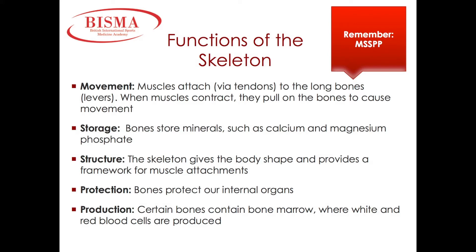Why is our skeleton so important? Without the skeleton, we wouldn't be able to move, because muscles attach via tendons to our long bones — also known as the body's levers — and when a muscle contracts, they pull on the bones to cause movement. Bones also store minerals such as calcium, magnesium, and phosphate. The skeleton gives the body shape and provides a framework for muscle attachments. Bones also provide protection — for example, the rib cage protects the heart and lungs, the pubic bones protect reproductive organs, and the cranium protects the brain. Certain bones contain bone marrow, where white and red blood cells are produced.